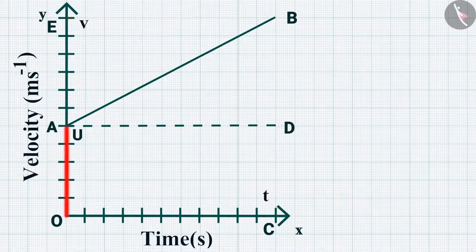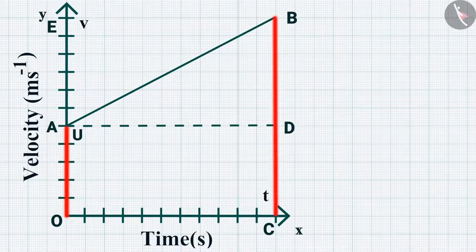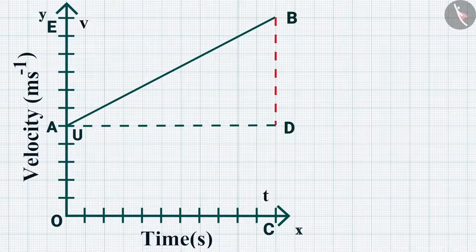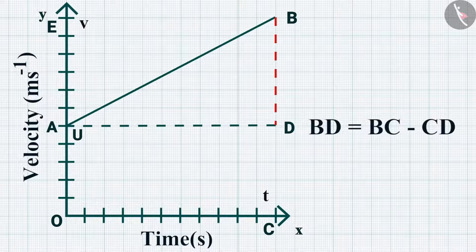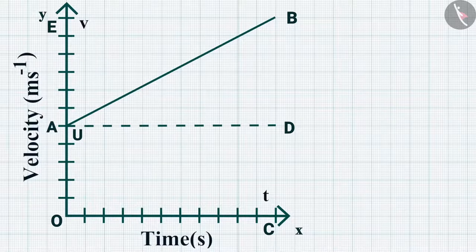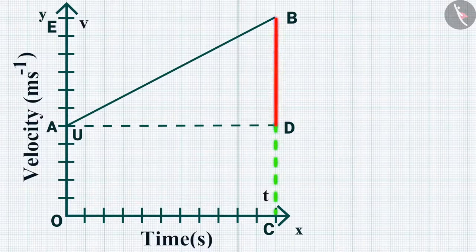OA is initial velocity, BC is final velocity, and OC is the time interval T. The change in velocity is shown by line BD, where BD equals BC minus CD. Draw a line AD parallel to OC. From the graph, BC equals BD plus DC, which equals BD plus OA.